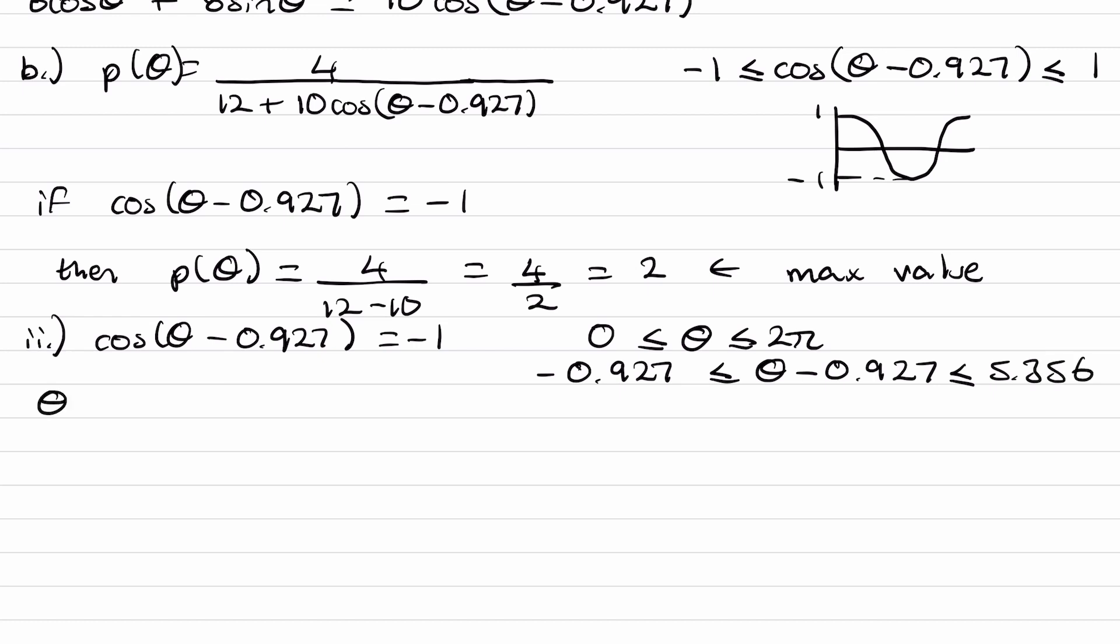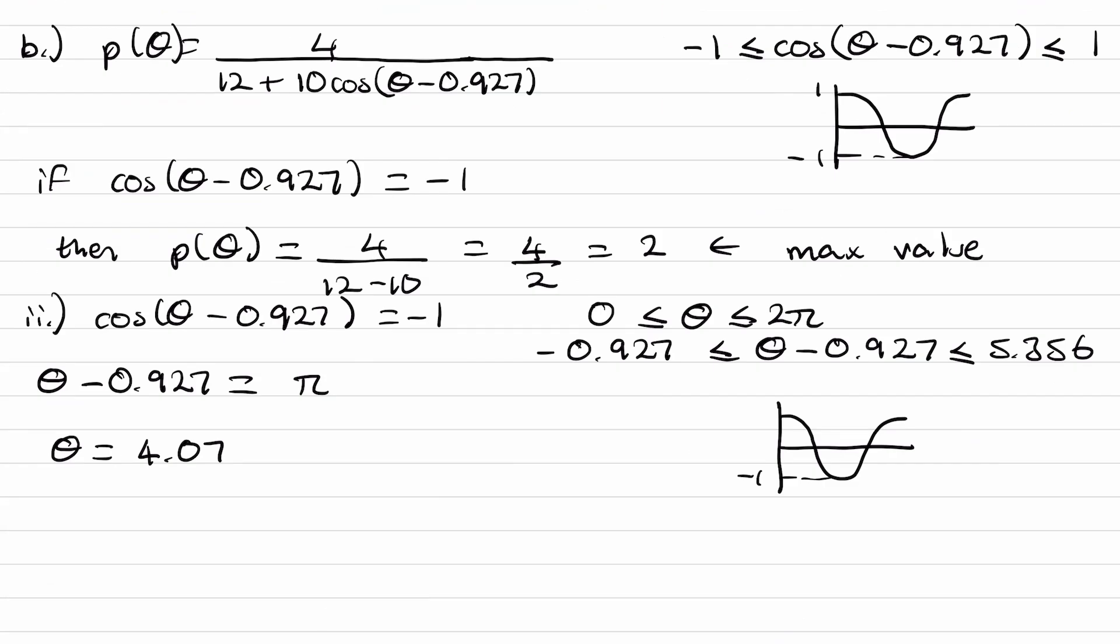And then we can do inverse cos of minus 1. So theta minus 0.927, inverse cos of minus 1 would be pi. And when a cos graph is equal to minus 1, so a cos graph that hasn't been stretched vertically or horizontally, a cos graph is only equal to minus 1 every 2 pi radians. So then with this value here, we can add or subtract 2 pi to that to get the values after and before, but none of those will be in this domain. So we stop there. We just add 0.927 to that value of pi, and we get 4.07, which would be our final answer. There's no requirement on decimal places, so this would be it.